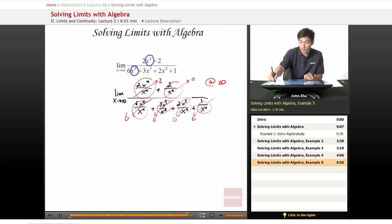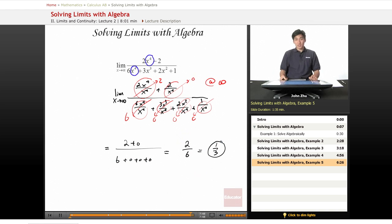So finally, rewriting everything, we get 2 plus 0 over 6 plus 0 plus 0 plus 0. Three zeros make one zero. So 2 over 6, or a third, is our limit to the expression.